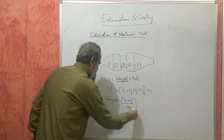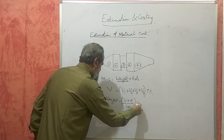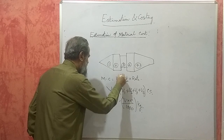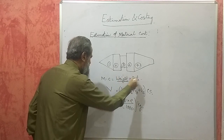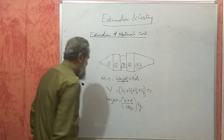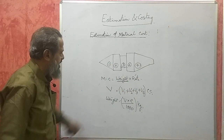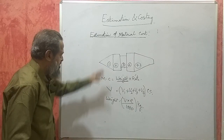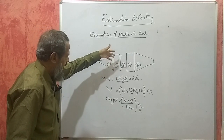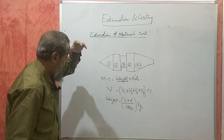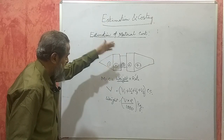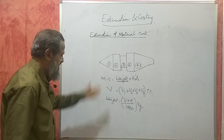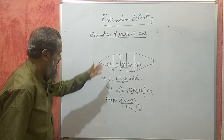If you divide by 1000, you will get the weight in kg. Then, that weight you substitute into the rate — the rate is given in the problem — and you will get the material cost of this product. That is, the cost of the material which has gone into this product. That is how it is done.